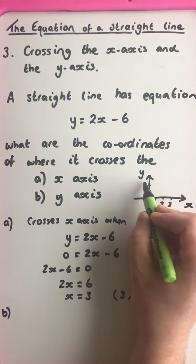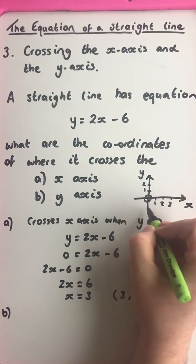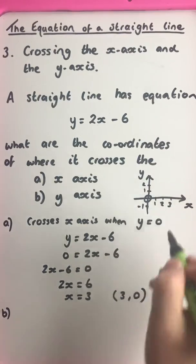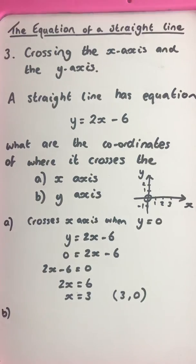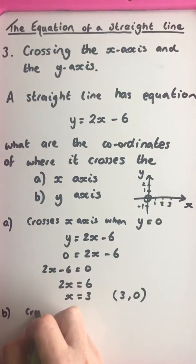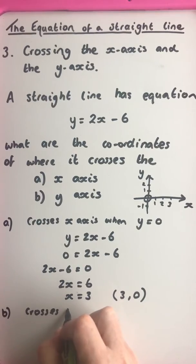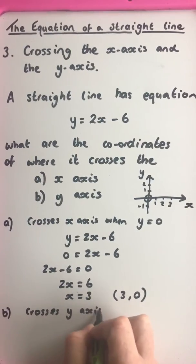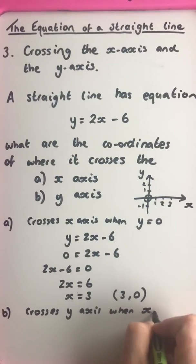This would be 0, 2. This would be 0, negative 1. So on the x-axis, the x value is 0 on the y-axis. So it crosses the y-axis when x equals 0.